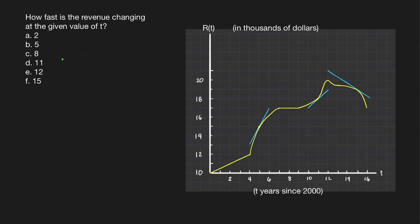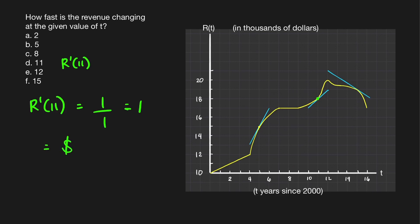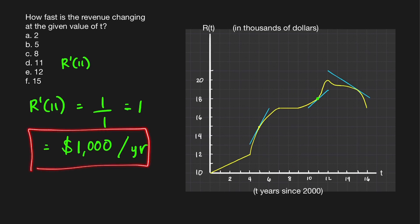For problem D, R prime of 11: the blue line is the tangent line at that point. Using rise over run — rise 1 unit, run to the right 1 unit — gives a slope of 1 over 1, which equals 1. The unit is $1,000 per year, so after 11 years, the revenue is increasing at a rate of $1,000 per year.